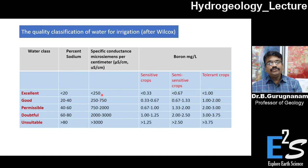This is less than 250, 250 to 750, 750 to 2000, 2000 to 3000, more than 3000. The category is excellent if less than 2000. If it is more than 2000 to 3000 μs per centimeter, it is highly unsuitable. Boron milligram per liter leads you to assess boron for sensitive crop, semi-sensitive crop, and tolerant crop.